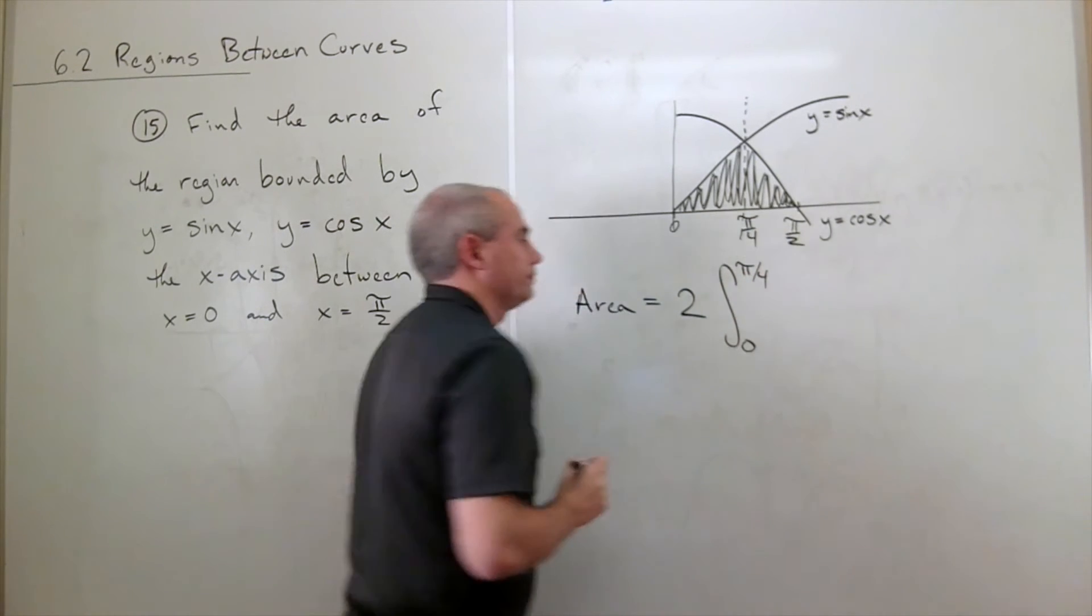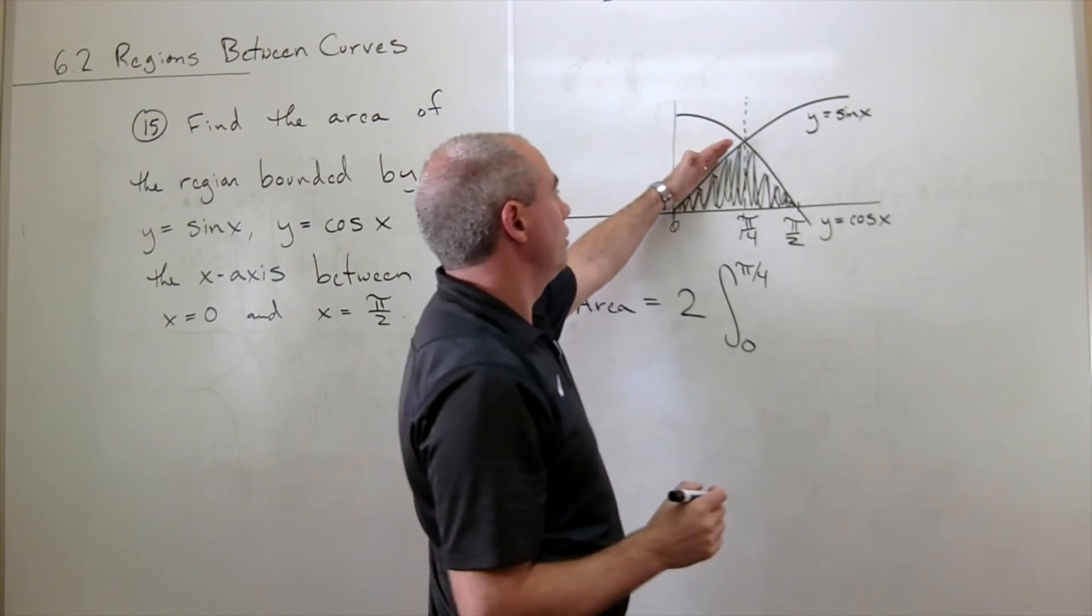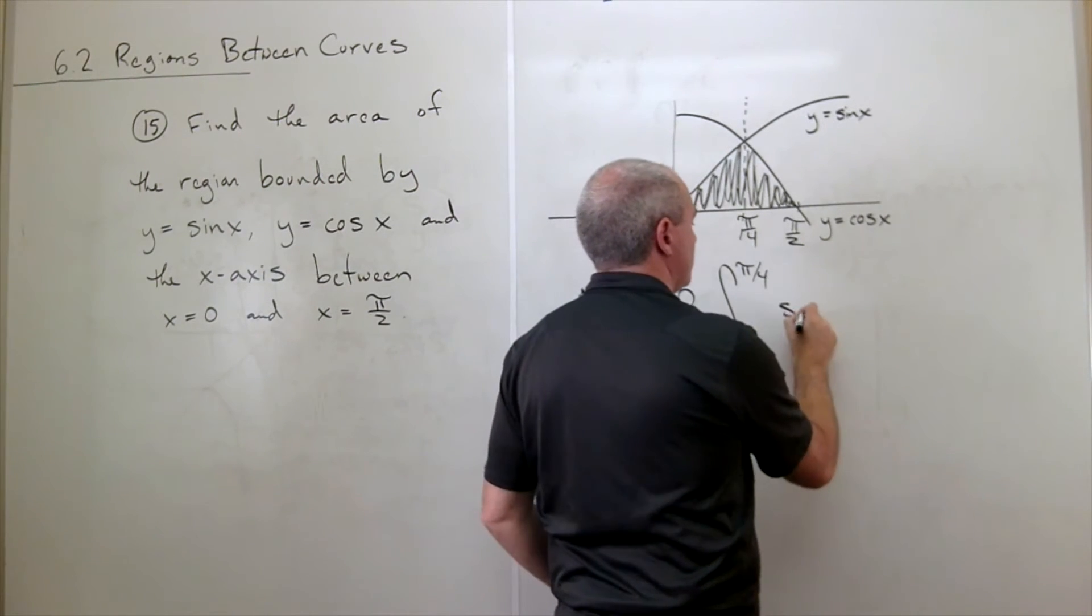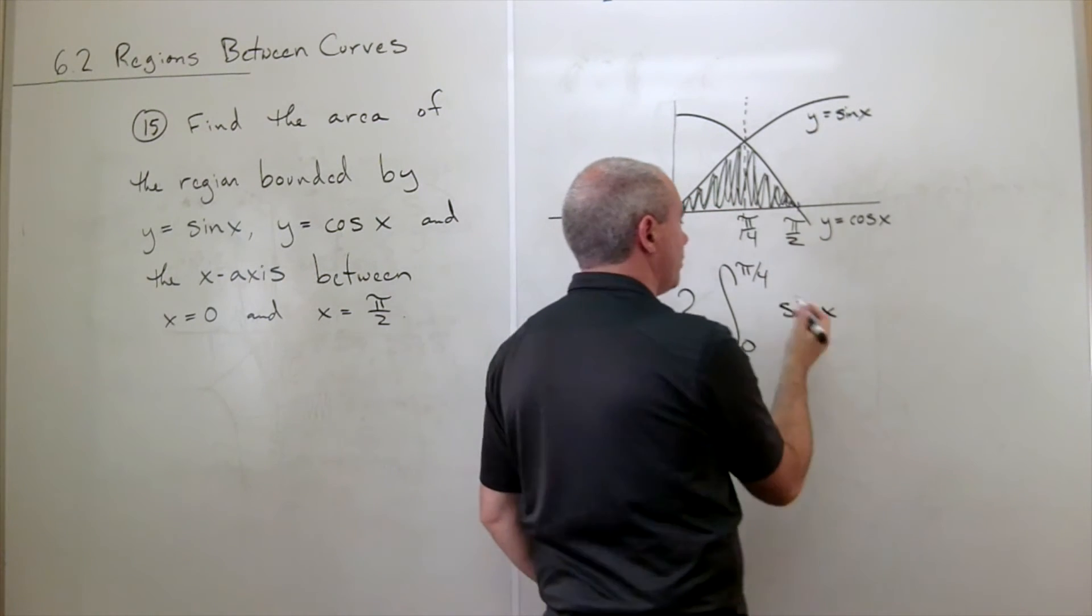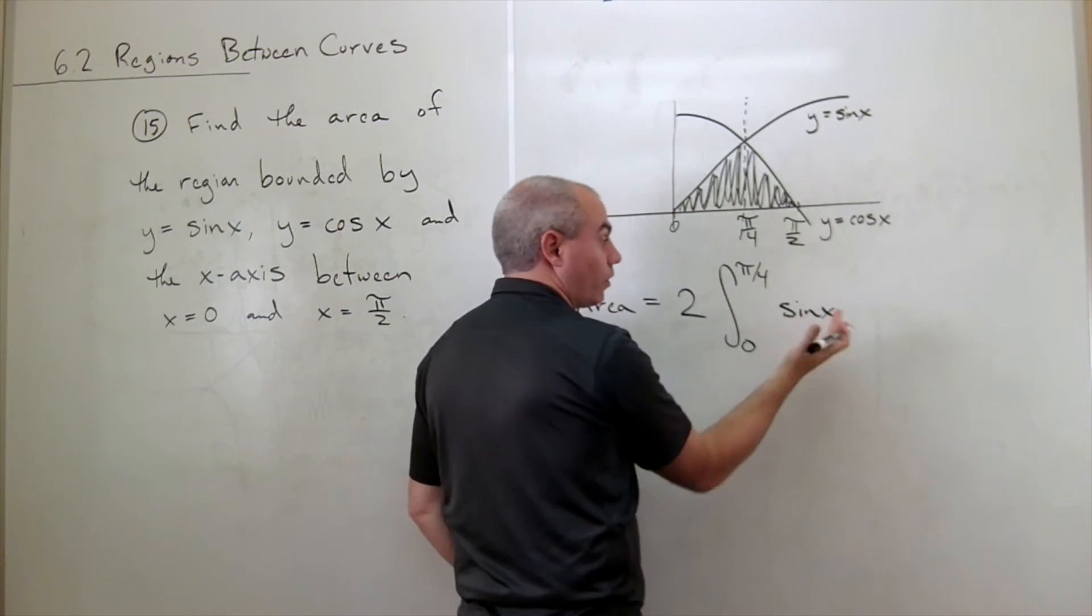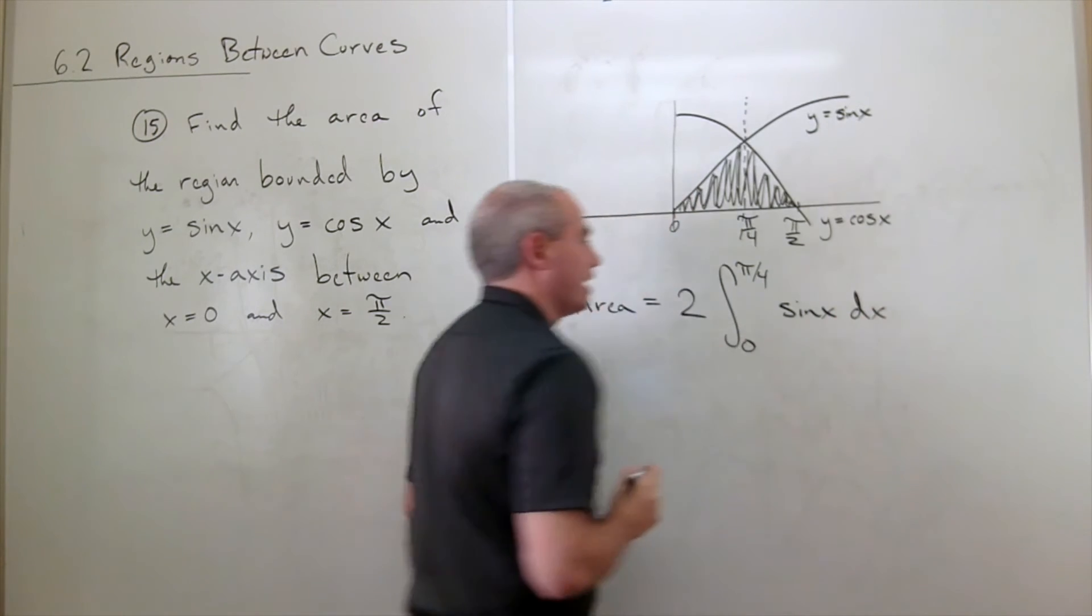of the top function, which is sine of x, minus the bottom function, which in this case is 0, so I minus 0, or I'll just leave it as sine of x dx.